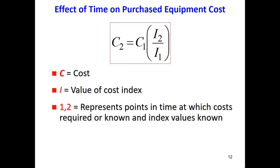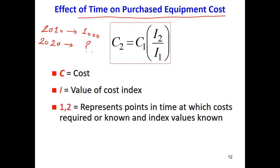Another factor we have is the effect of time on the purchase of equipment. For example, if I buy a heat exchanger in 2010 and the price was $1,000, now in 2020 if I want to buy the same heat exchanger, what is the price? For this we use a specific equation, and we need to use a price index, which we denote with 'I', found from tables provided by various sources.